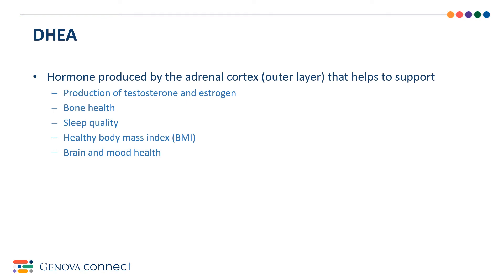The other hormone we measure on the adrenal cortex stress profile is DHEA. It is also secreted by the adrenals in the cortex, or the outer layer. It is considered an adrenal androgen hormone, meaning that it is produced in higher amounts in men versus women. Because it is secreted from the adrenals, just like cortisol, it is oftentimes linked with stress. DHEA has many functions, including making other sex hormones like testosterone and estrogen, keeping our bones strong and healthy, sleep, maintaining a healthy weight, and brain plus mood health.